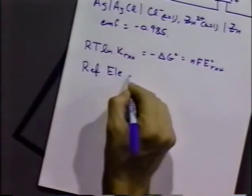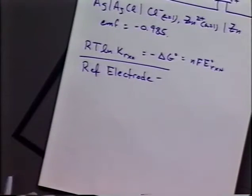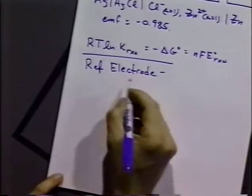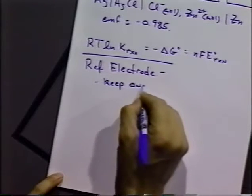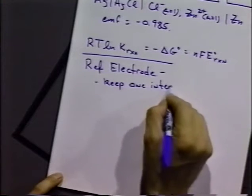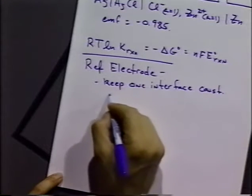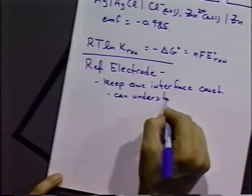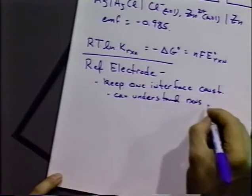As we mentioned last time, a reference electrode is always required. When we consider cell potentials, we're always going to be measuring versus a cell potential. So as long as we keep one interface constant, we can understand reactions and cell potentials at the other interface.